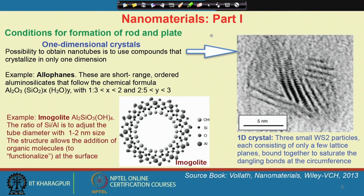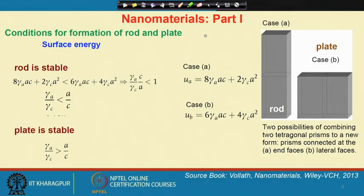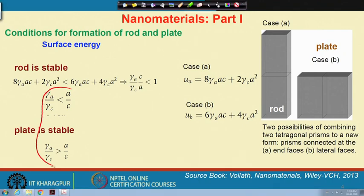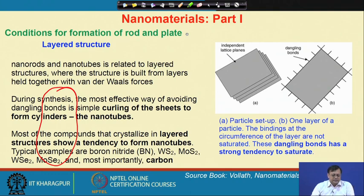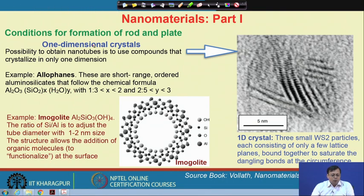So to summarize the factors that determine nanomaterial shape: the first is the ratio of the axis dimensions and the surface energy terms. The second is the layered structure. The third is one-dimensional crystals, which can also provide the possibility to obtain nanotubes by using compounds that crystallize in one dimension.